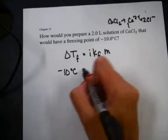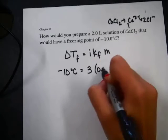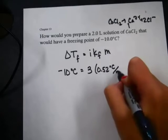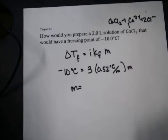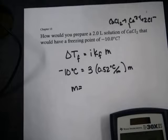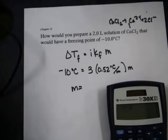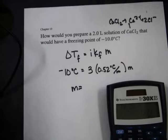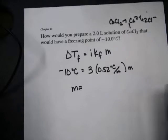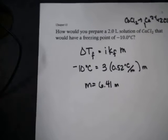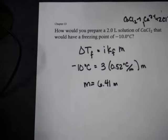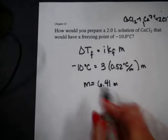My change in freezing point would be negative 10 degrees Celsius. I want it to go down by 10 degrees, and then 3, and then 0.52 is the Kf of water. My molality is what I'm solving for. So I need to do 10 divided by 3 divided by 0.52 in my calculator, and I get 6.41. The unit comes from the Kf unit, so 6.41 molal.